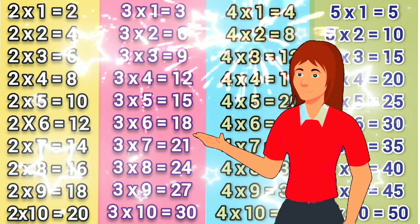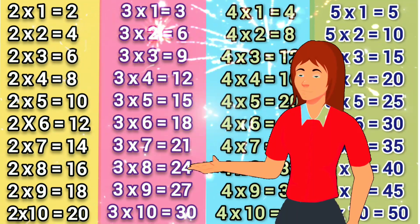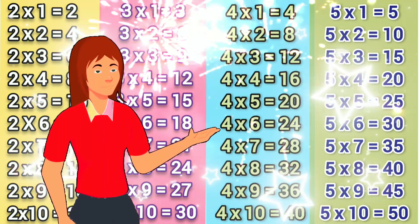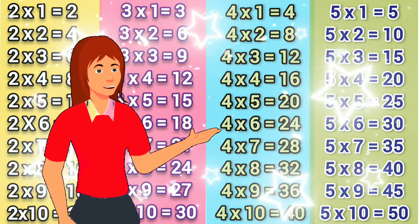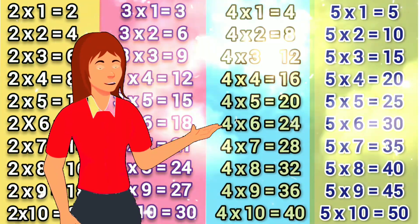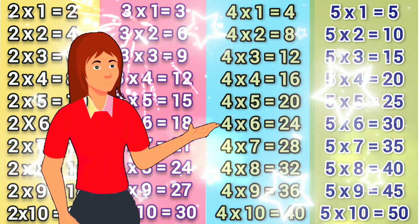4 1's are 4, 4 2's are 8, 4 3's are 12, 4 4's are 16, 4 5's are 20,